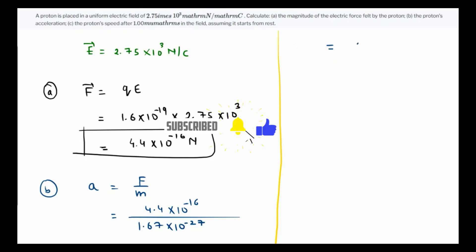This is coming as 2.63 times 10 raised to—27 minus 16, which is 11—and the unit is meter per second squared. And the final part asks about the proton speed after 1 microsecond.